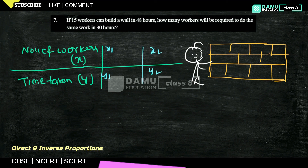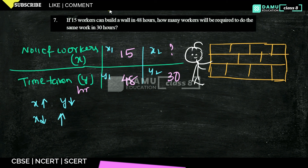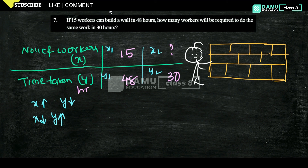X1, the number of workers the first time, is 15 workers, and Y1 is 48 hours. They want to build the same wall in 30 hours, so Y2 is 30 hours and X2 is what we need to find. If you increase the number of workers, time taken will be less; if you decrease the number of workers, time taken will be higher. So number of hours is decreased, which means we must increase the number of workers. X is inversely proportional to Y, meaning X = K / Y, so K = X × Y.